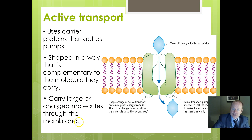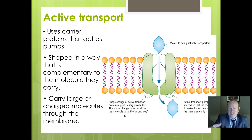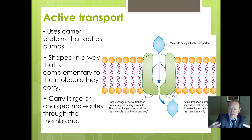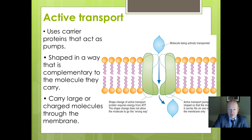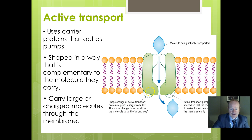Active transport uses what we call carrier proteins — sometimes called protein pumps — and they are specific to a particular substance they want to pick up, so they're complementary in shape. Unlike channel proteins, which might just be a pore allowing things to move through, carrier proteins are usually specifically shaped for larger or charged molecules and for bringing things in against their concentration gradient.